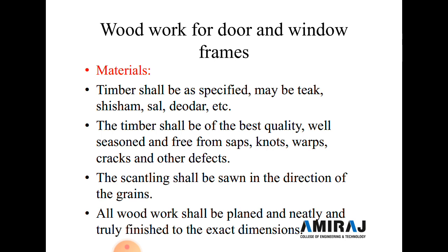The next important item specification is wooden work for door and window frames. For material specification, timber shall be specified — maybe teak, sal, deodar, etc. The timber shall be of the first best quality and well seasoned, free from knots, warps, cracks, and other defects, with no moisture content in the timber frames.